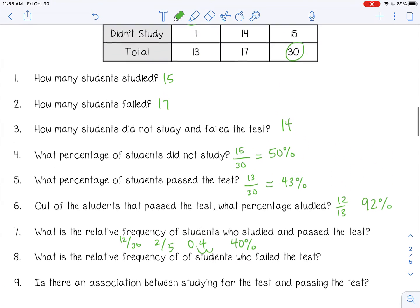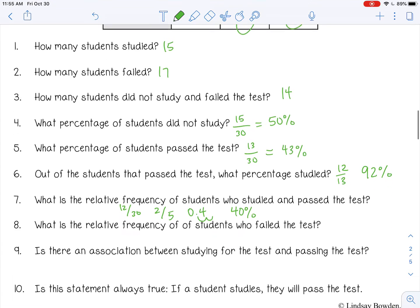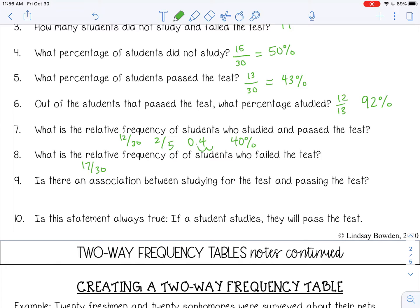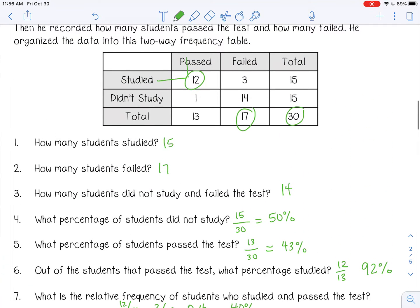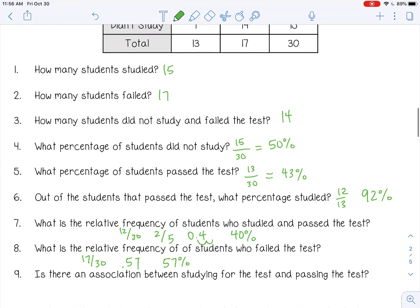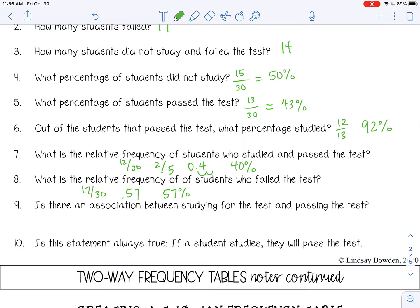What is the relative frequency of students who failed the test? Failed, that would be 17 out of 30. You can't reduce that, so let's change it. 0.57 if we round it, or about 57%. Number nine, is there an association between studying for the test and passing the test? So studying and passing. It looks like out of those that studied, 12 passed and three failed. So it looks like if you study, it's more likely that you will pass according to this data and probably in real life too. Yes. Studying seems to mean passing.